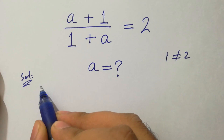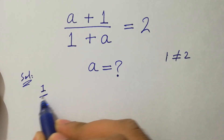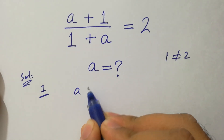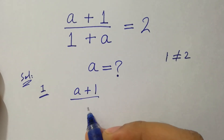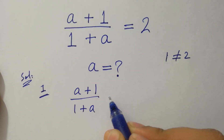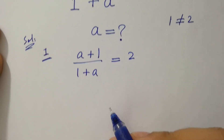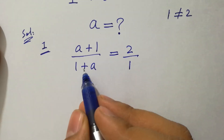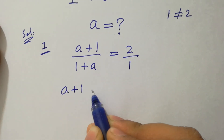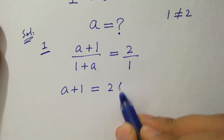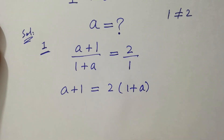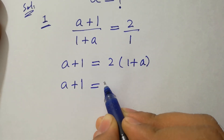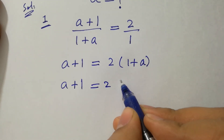Let's take the first method to solve this problem. We have (a+1)/(1+a) = 2. By cross multiplication, we have a+1 = 2 times (1+a), which gives us a+1 = 2 + 2a.